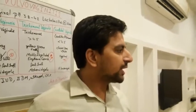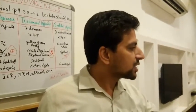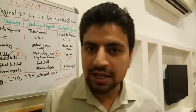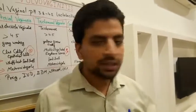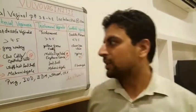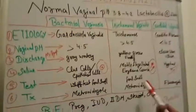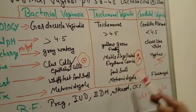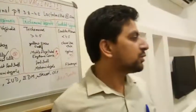For treatment: Dr. Embele, how do we treat bacterial vaginosis? The drug of choice is metronidazole — yes, that is correct. Trichomonal vaginitis is also treated with metronidazole.